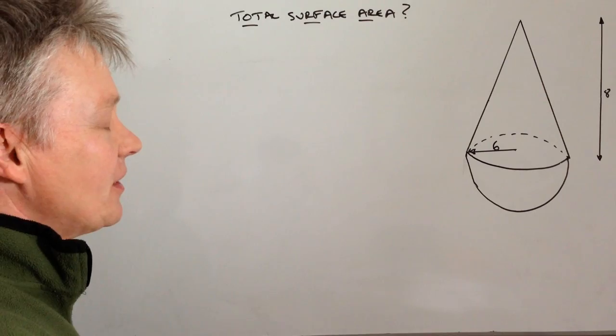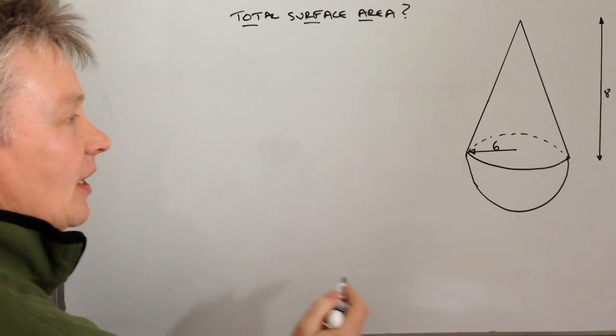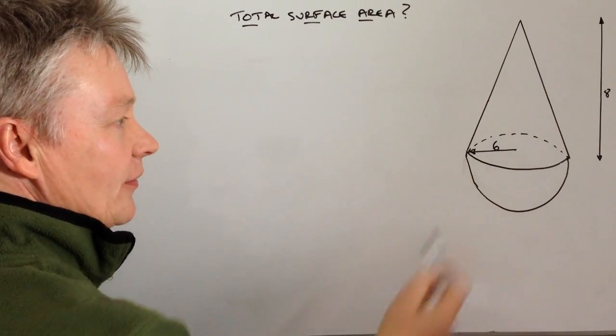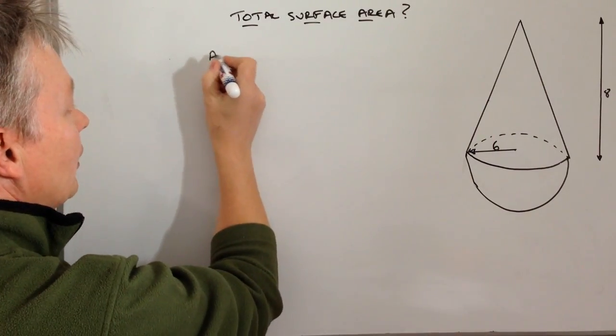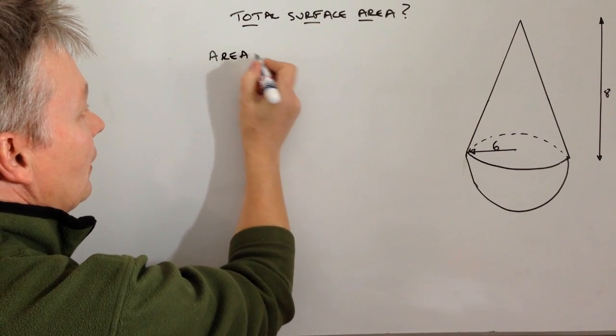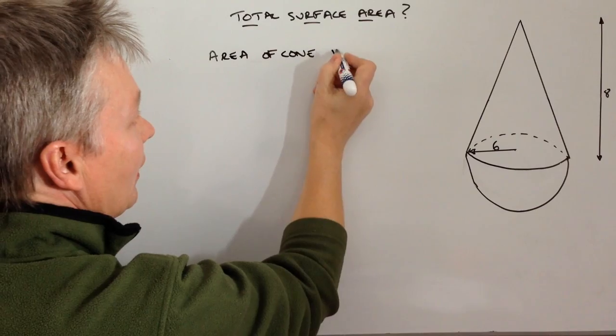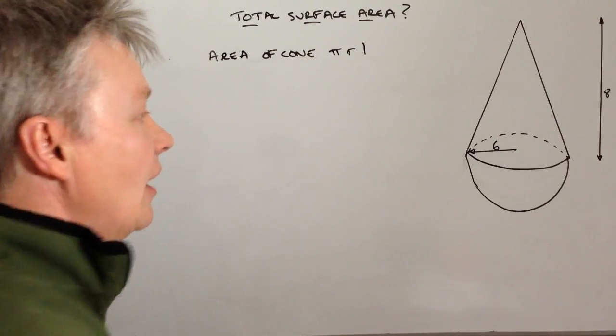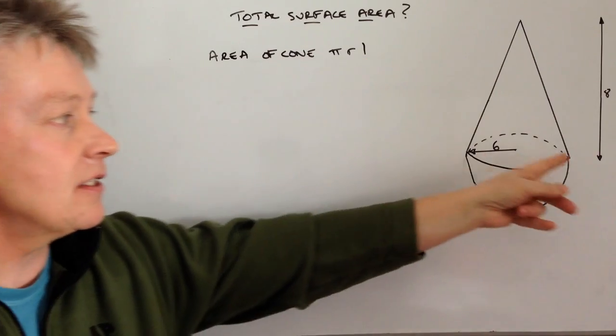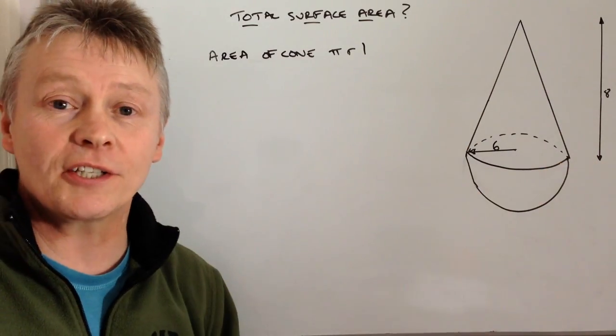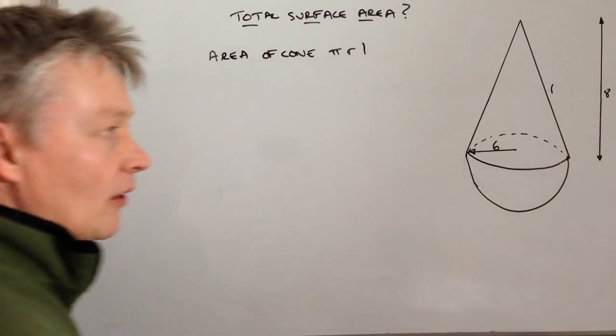With these types of questions you need to be a little bit careful. What you're looking to do is find firstly the surface area of the cone itself. The area of a cone, or surface area of a cone, is going to be πrl. But it's important to appreciate that this l is not the overall height, it's actually the slant height, so it's this one along here.